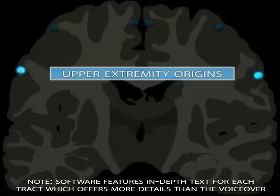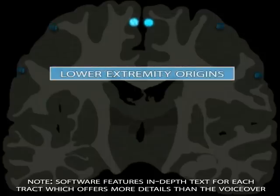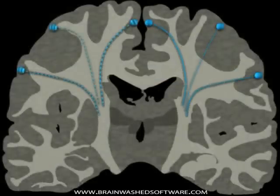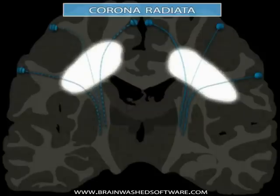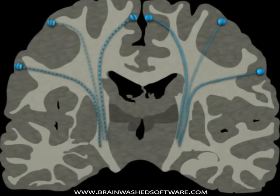The cell bodies of the upper motor neurons of the corticospinal tract are located in the cerebral cortex. Fibers of the tract will influence lower motor neurons that innervate musculature in the extremities and trunk. The axons of upper motor neurons begin their descent to the spinal cord by passing through the corona radiata and internal capsule.